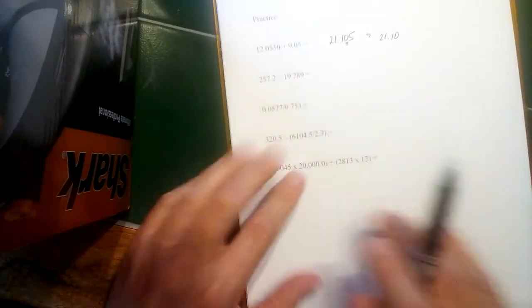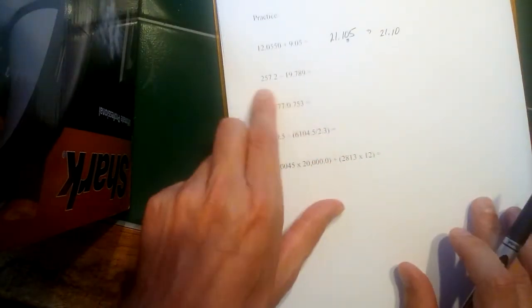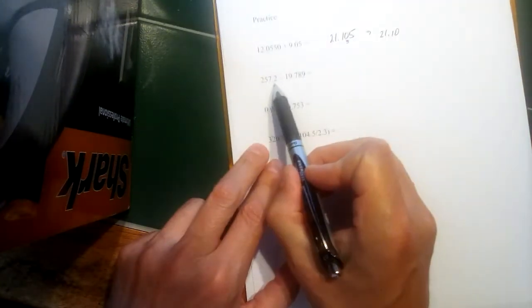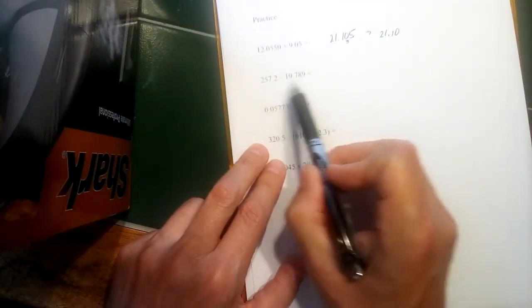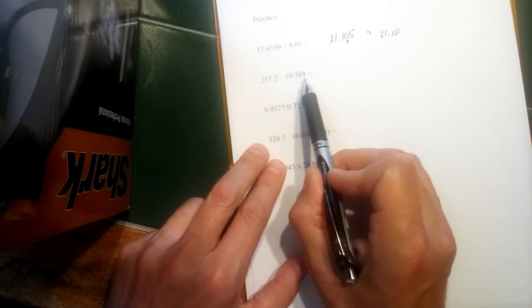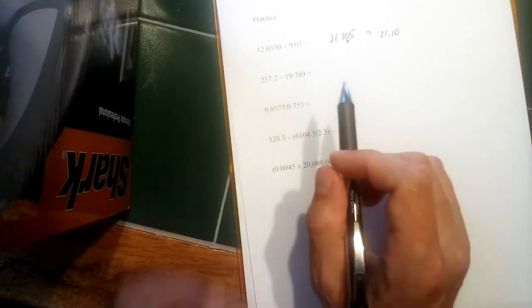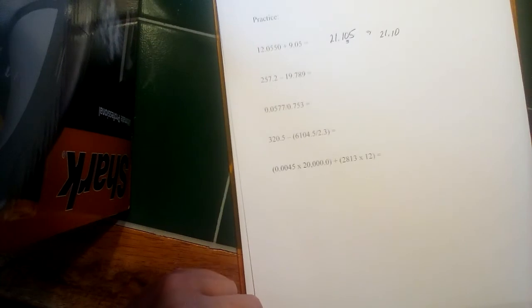The second example here is also going to follow the same rule because it's a subtraction. The first piece of data ends one place past the decimal or the tenth place. The other one goes three places past the decimal. And that means our answer's got to stop one place past the decimal.